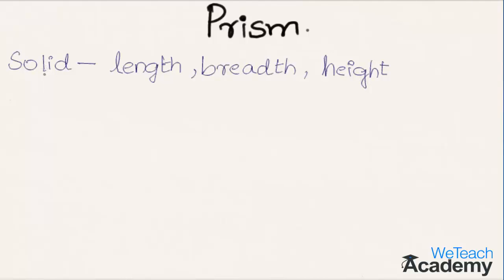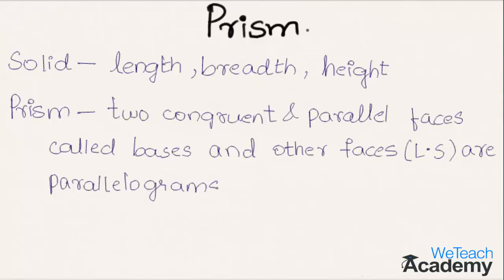Now let me define prism. A prism is a solid having two congruent and parallel faces which are called bases, and all the other faces — the lateral surfaces — are parallelograms formed by joining the corresponding vertices of the bases.